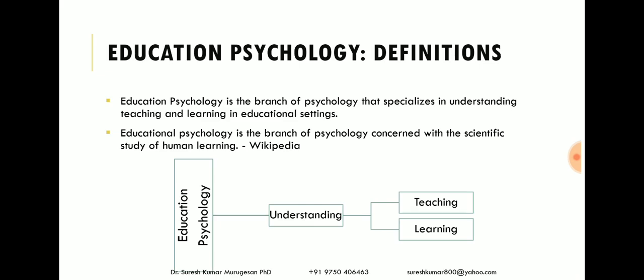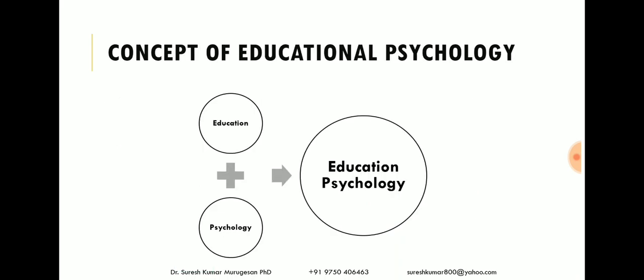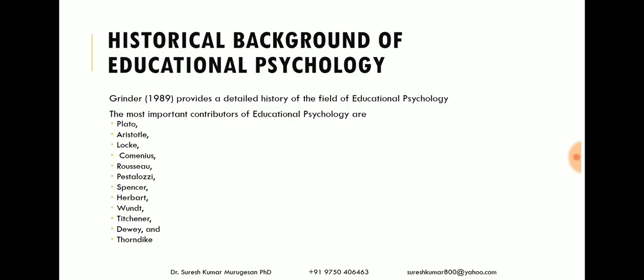Now we are going to understand the term education psychology. Education psychology is a branch of psychology that specializes in understanding teaching and learning in an educational setting. It is one of the applied psychologies; the main purpose is to understand the teaching and learning process. Education psychology merges two different fields — education and psychology — into a new field. This picture gives clarity about the concept of education psychology.